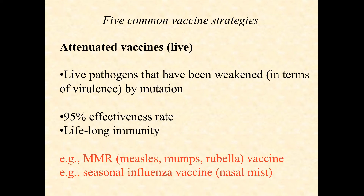I'm going to introduce them briefly and give you an example of each. They each have trade-offs, and that's important to recognize. The first is called an attenuated live vaccine. This is where live pathogens are introduced into the body, but they've been weakened through mutation. There are a variety of ways we can do that.